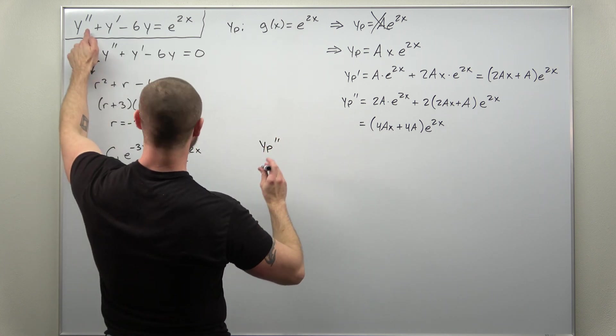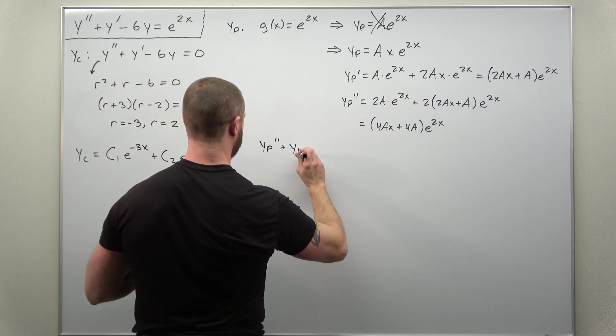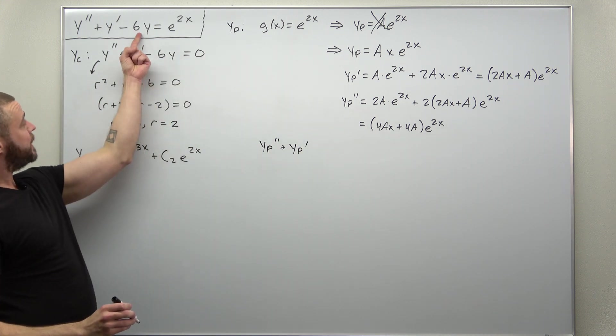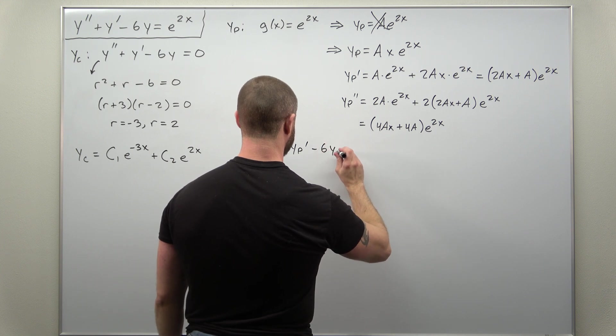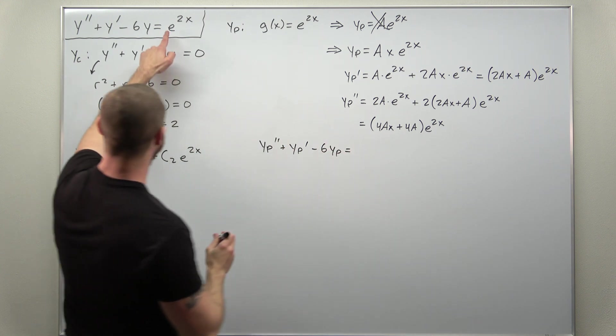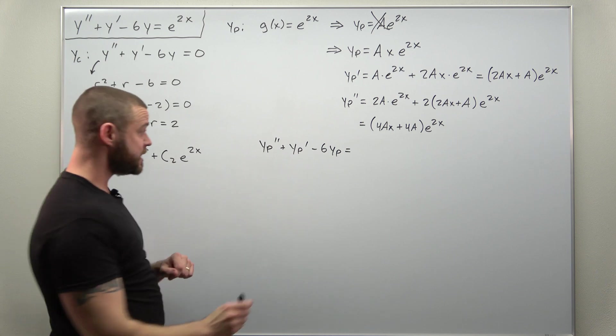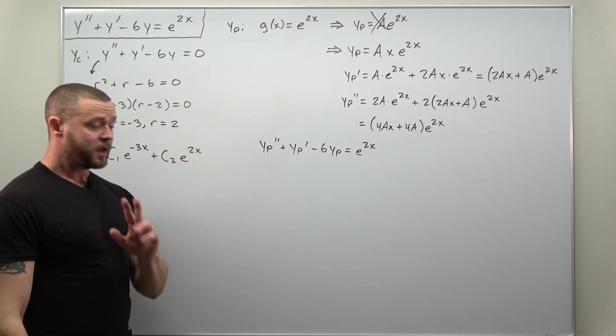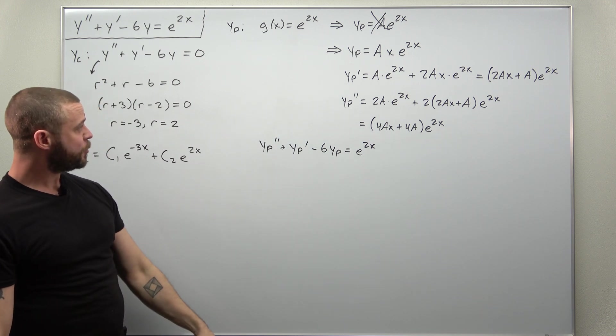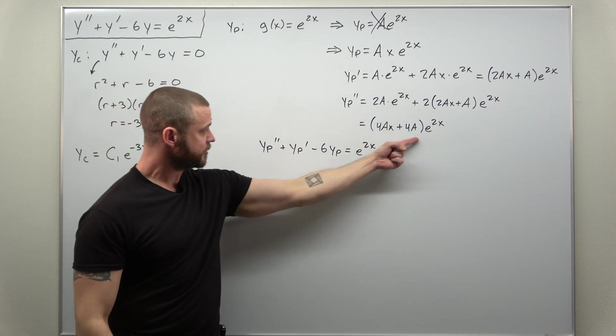So yₚ'' + yₚ' - 6yₚ, and we want that to come out to equal e^(2x).